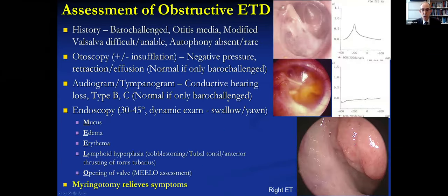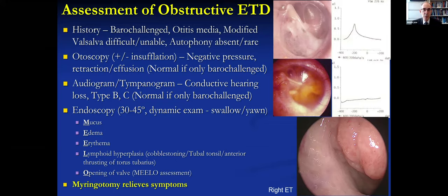To critically assess obstructive eustachian tube dysfunction — the most common situation — starting with the history: if it's obstructive they should be baro-challenged when they fly or scuba dive, and may have a history of otitis media. They shouldn't be able to easily do a modified Valsalva: nose and mouth closed, gently elevate intranasal pressure with a mild nose blow and simultaneously swallow, using the muscles to open the eustachian tube — not a forced-air Valsalva, which carries more risk for sensorineural hearing loss and vertigo. This is much more effective; it's how scuba divers do it. If they're obstructive, they generally cannot do this, or it's difficult.